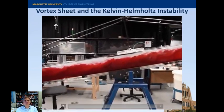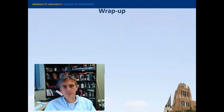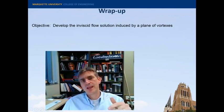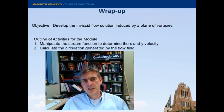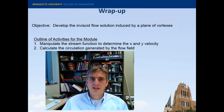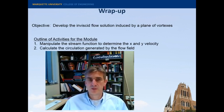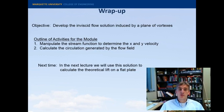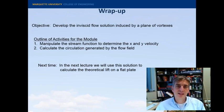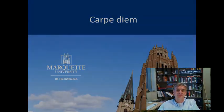All right, so that's the vortex sheet and the Kelvin-Helmholtz instability. So to wrap up, the objective was to develop the inviscid flow solution for a plane of vortices called the vortex sheet. Manipulate this to find the stream function and determine the x y velocity components, and then calculate the circulation of the far-field flow. Next time, we're going to use a part of this sheet to generate the flow field around a plate and then ultimately calculate the lift of that plate and the circulation around it. All right. So until next time, we'll see you next time.